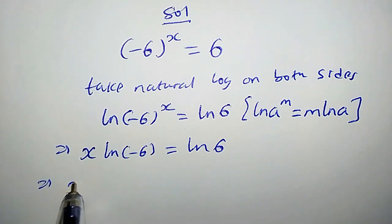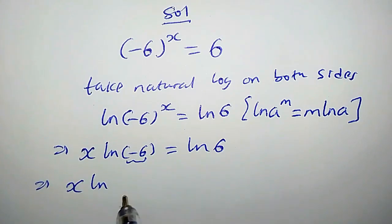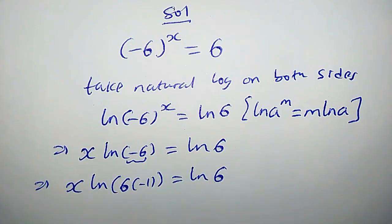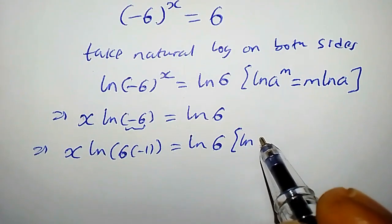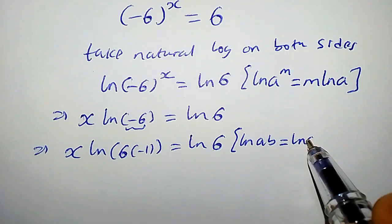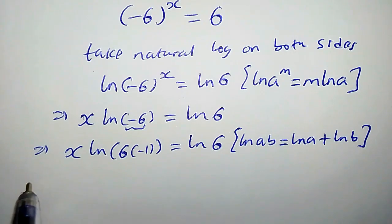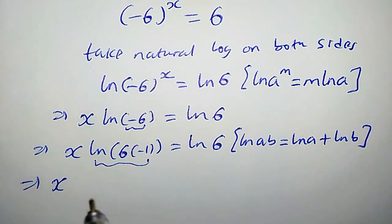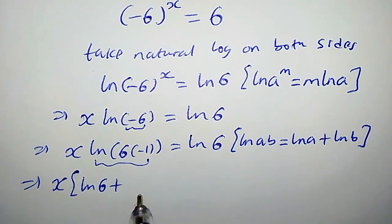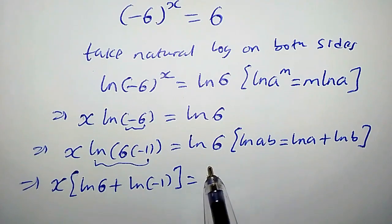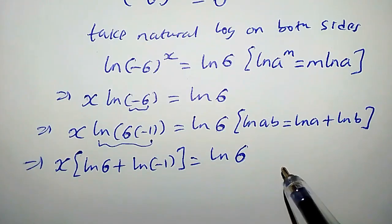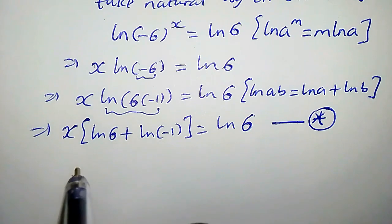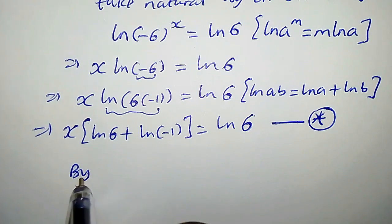We have x times ln(−6), which can be written as ln(6 times −1), equal to ln(6). Recall that ln(ab) = ln(a) + ln(b). Applying this property, we have x times [ln(6) + ln(−1)] = ln(6). Let's call this equation star.